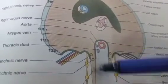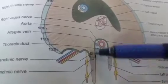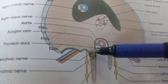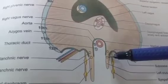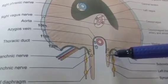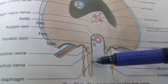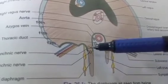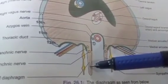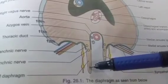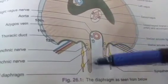The right crus of the diaphragm is larger and stronger compared to the left crus. This may be because it has to pull down the liver during inspiration. It arises from the anterolateral surfaces of the body of the upper three lumbar vertebrae and the intervening intervertebral discs.